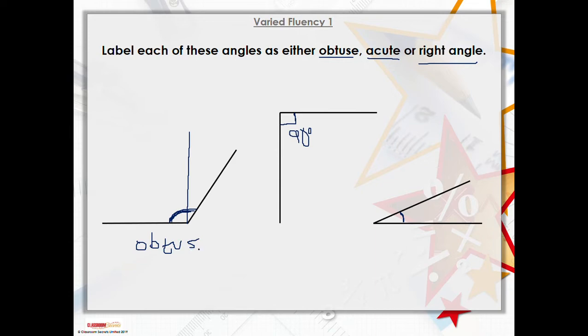angle. The angle is greater than 90 degrees but smaller than a straight line. So we've got a right angle in the middle, that must mean that this far one must be an acute angle because the angle is actually smaller than a right angle.